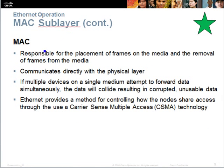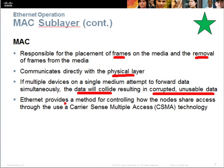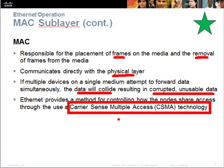The MAC address layer controls and removes frames on the media and communicates directly with the physical layer. If data collides, it results in corrupted and unusable data. To prevent this, it uses a technology known as carrier sense multiple access (CSMA). This is a key component of Ethernet.